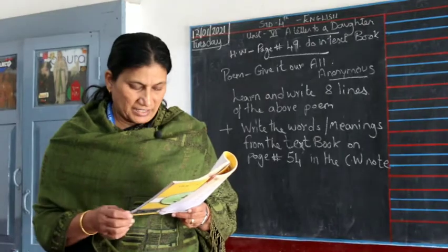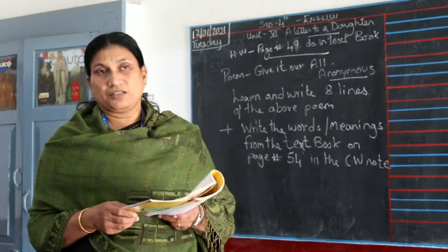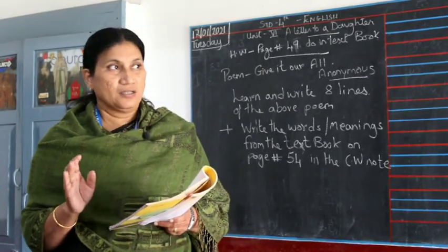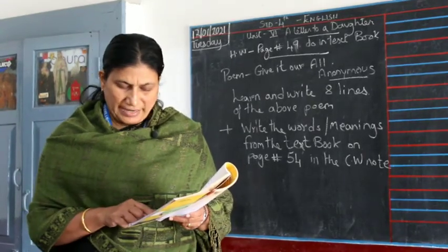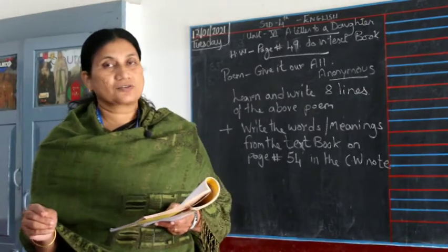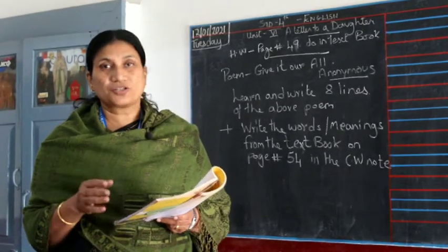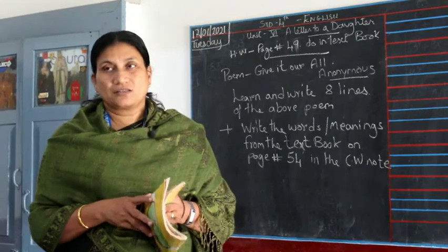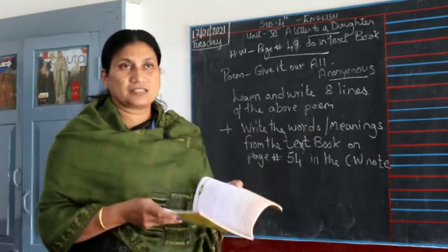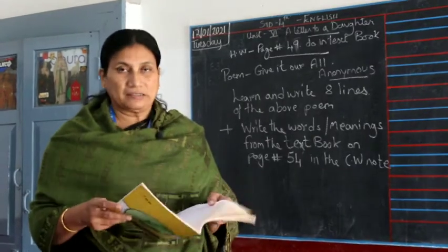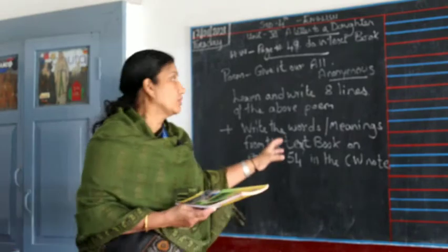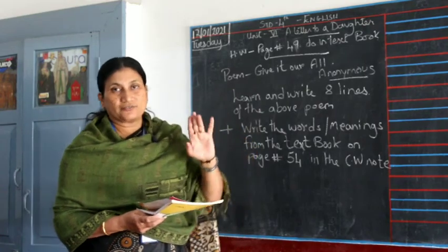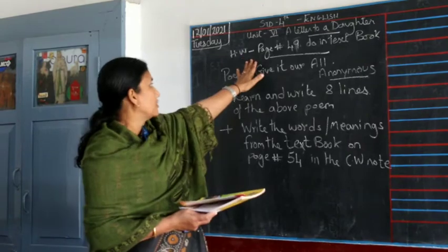Third: 'Eklavya made a clay model of his mother' — this is wrong. Eklavya made a clay model of his teacher Dronacharya. Fourth: 'Dronacharya agreed to teach Eklavya' — this is also wrong. Eklavya wanted to learn archery but Dronacharya refused to teach him. Go back to the lesson, check, and write the correct sentences. Do all of page 49 in the textbook; your classwork note should only have words meaning and question answers.